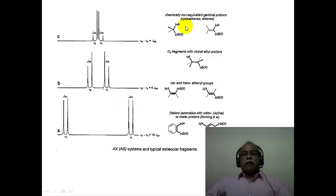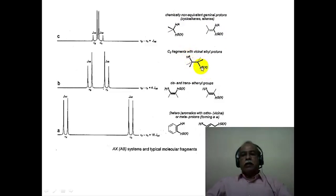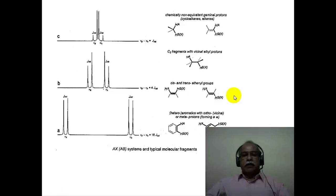Again, some examples of the AB kind of a system: you can have diastereotopic methylene hydrogens or geminal olefinic hydrogens; you can have two hydrogens on adjacent carbons in an aliphatic chain; you can have two cis or trans hydrogens, ortho hydrogens or meta hydrogens — all mutually coupled to each other — representing an AB type of a system.